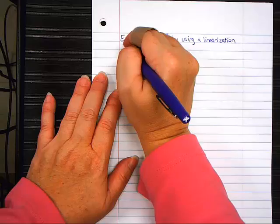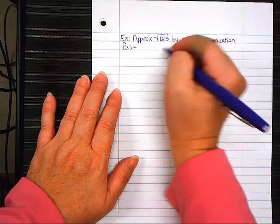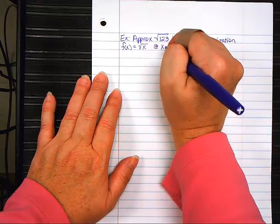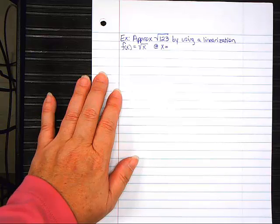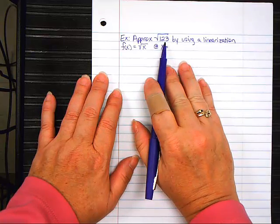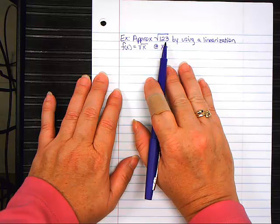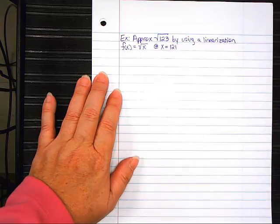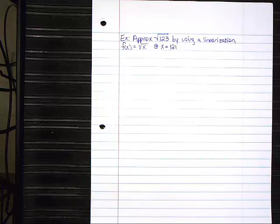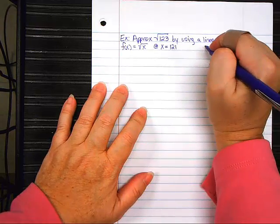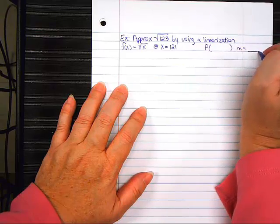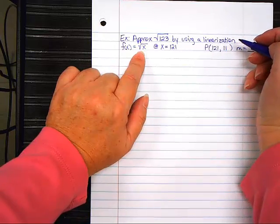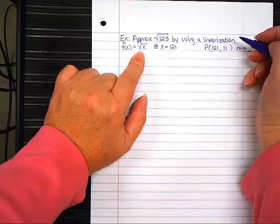But we're going to use a linearization. We're going to find an equation of a line that's really close to the square root curve. And we're going to estimate what this is. So, what we're going to do is we have to come up with a function. Now, because we're wanting the square root of something, we're going to use the plain square root function. Square root of x. And we want to choose our x, our a value, to be something close to 123 that I can take the square root of. Not 11. 11 is not close to 123. 121. I want to go through the same process I just did and find the equation of that tangent line. So, point and slope. The point is 121 comma 11.